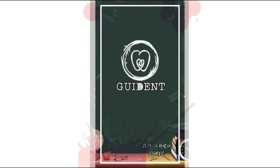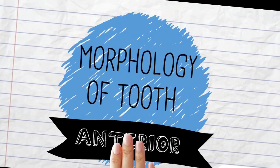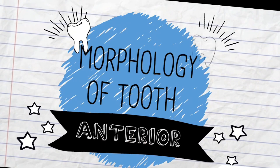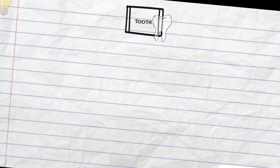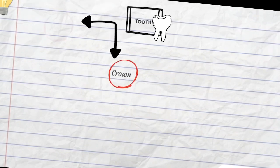Hello everyone, here we are to discuss the morphology of tooth. This video will discuss the anterior teeth, that is the maxillary and mandibular incisors and canines. All the teeth will be discussed in a similar fashion.